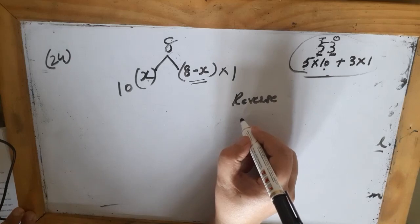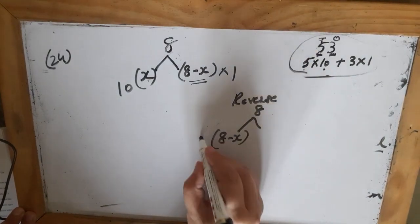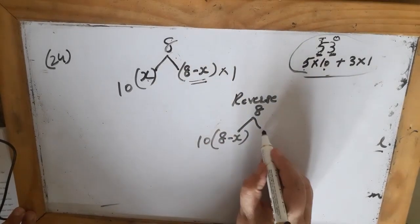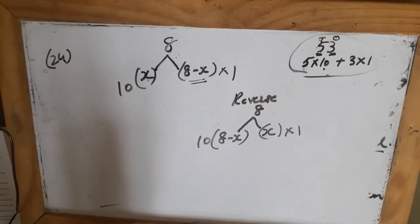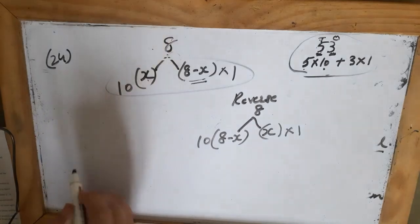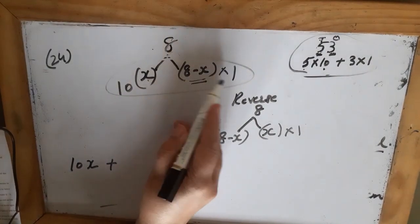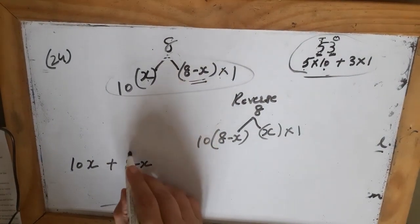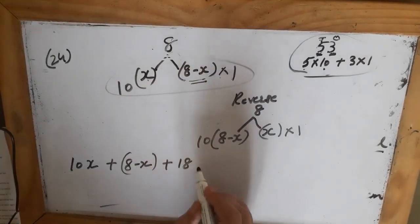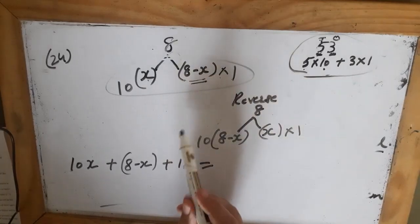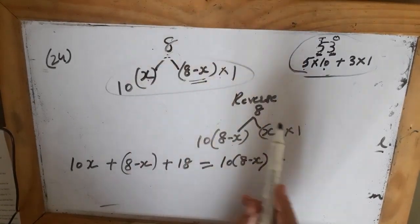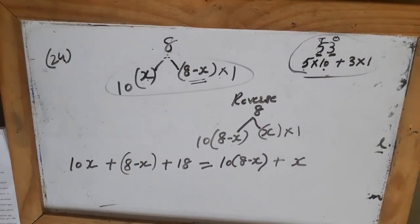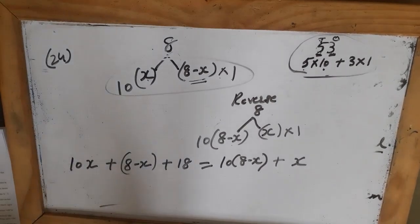When the digits are reversed, the number that was at the ones place goes to the tens place and the number at the tens place comes to the ones place. Now we form the equation: the original number is 10x plus (8 minus x). They say when you add 18 to this number, the digits get reversed, giving 10(8 minus x) plus x. You solve it and you will get the answer.